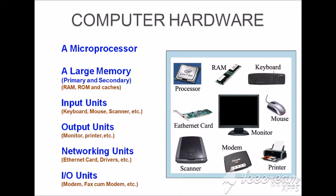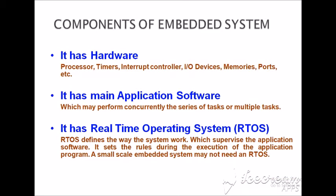Next, the computer hardware we need. We need a processor or controller, and memory to store data — that is RAM, ROM, or cache. We need input units such as keyboard, mouse, and cameras, and output units such as monitors and printers. For networking, if you want to communicate with a satellite, cloud, or wirelessly, you need a networking unit. After that there are I/O units like modems. Hardware includes processor, timer, input hardware devices, and software refers to the program you use for dumping code into the controller.